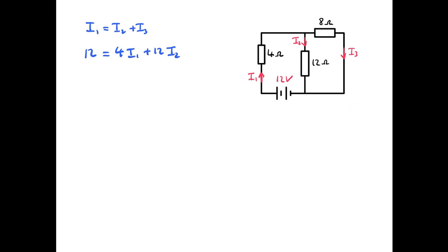If we look at the loop on the left-hand side, the 12 volts EMF going in must be equal to 4·I1 plus 12·I2. If we look at the outside loop, we can see that 12 volts from the battery must equal 4·I1 plus 8·I3. With this information, we now know that 12·I2 must equal 8·I3.